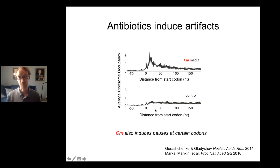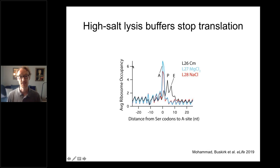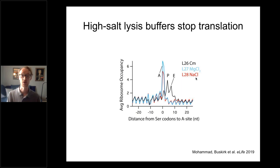We found that chloramphenicol also induces sequence-specific pauses at certain codons for alanines, glycines, and serines — bad because it interferes with the signal we care about. So we developed a method to stop ribosomes in the lysis buffer without any antibiotics. We added very high concentrations of magnesium or sodium chloride, and these salt concentrations trap ribosomes in one state so they can't move. No antibiotics required.